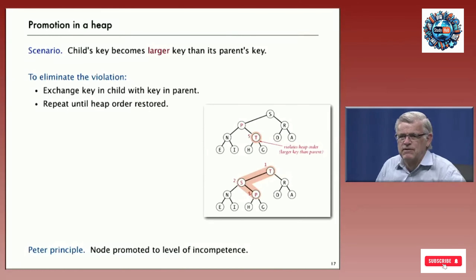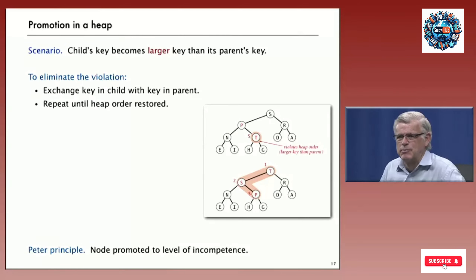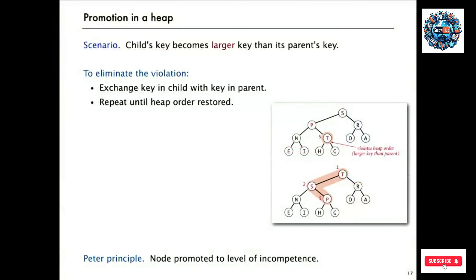That's the basic invariant we want to maintain in this data structure. Now we're going to take a look at just a couple of different scenarios where we violate that invariant temporarily and then fix it — that gives us the flexibility to implement priority queue operations. One scenario is if, for whatever reason, a child's key becomes larger than its parent's key. In this example, node T's value changes and becomes larger than its parent key P, so the heap order condition is violated at this node.